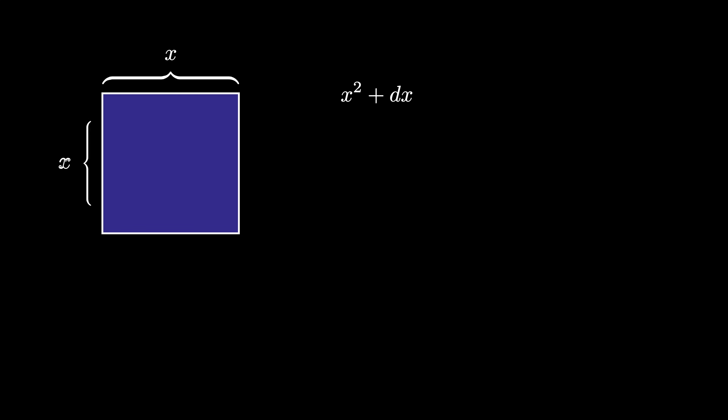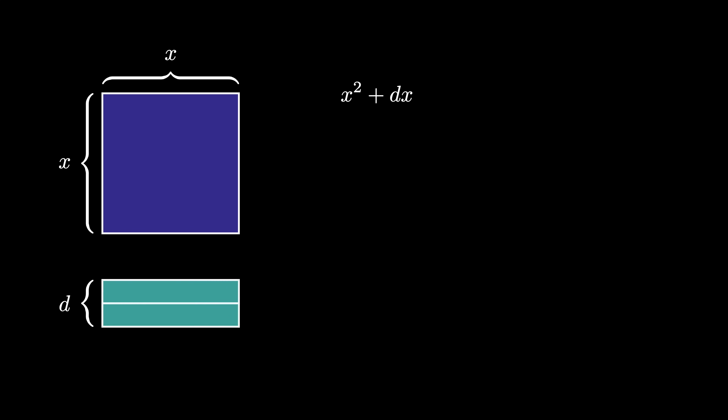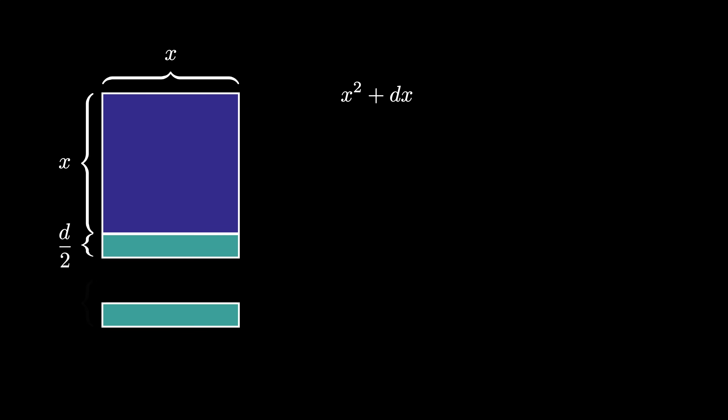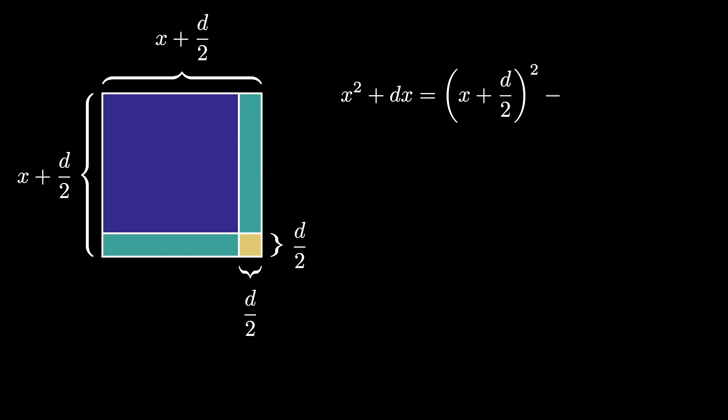Once you've grasped how to visualize the distributive property, you can begin adding other ideas to your visual algebra repertoire, such as cutting and moving areas around. The quantity x² + Dx can be represented with an x by x square on top of a D by x rectangle. We cut the D by x rectangle in half to produce two (D/2) by x rectangles, which we place on adjacent sides of the x by x square. The resulting shape is nearly a square with side length x + D/2, missing only a (D/2) by (D/2) square. So x² + Dx = (x + D/2)² − (D/2)².